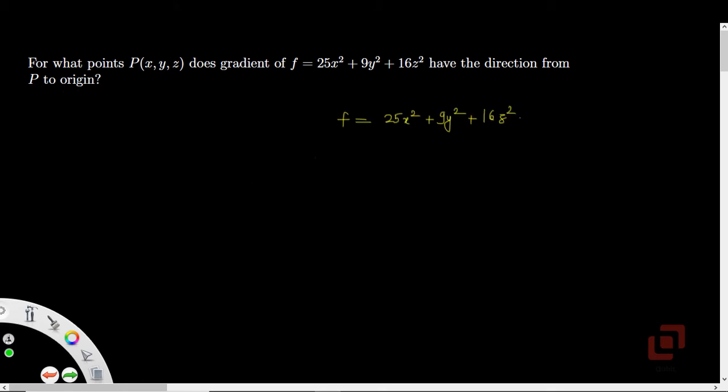To start, let us first write down the given scalar function, that is f = 25x² + 9y² + 16z².